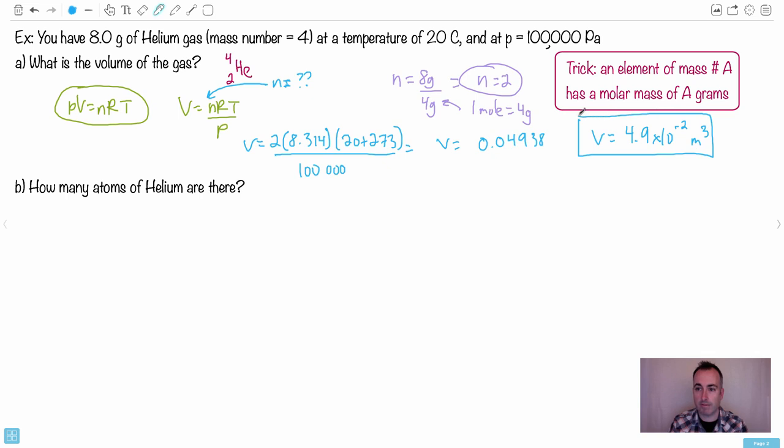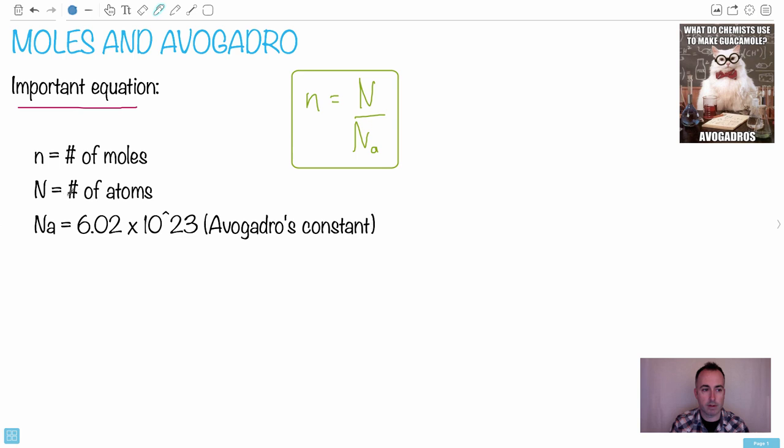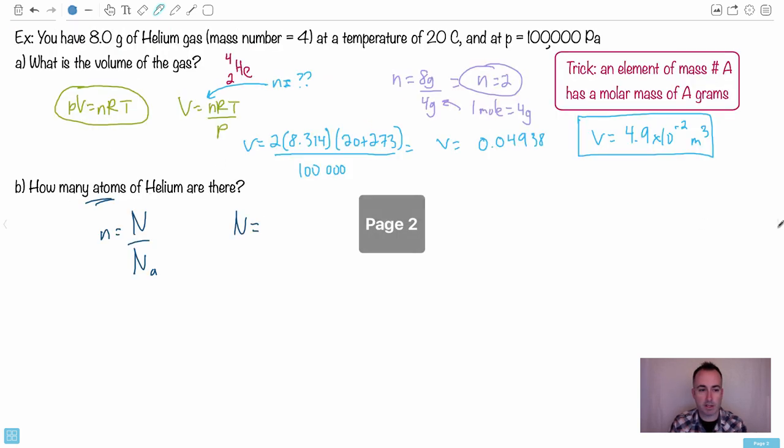Okay, so that's my answer for my volume. Now, how many atoms of helium are there? Luckily that's really easy now, because we can just use this equation that n equals capital N over Na. The number of moles equals the number of atoms divided by Avogadro's number. In this case I want to solve for N, that's the number of atoms.